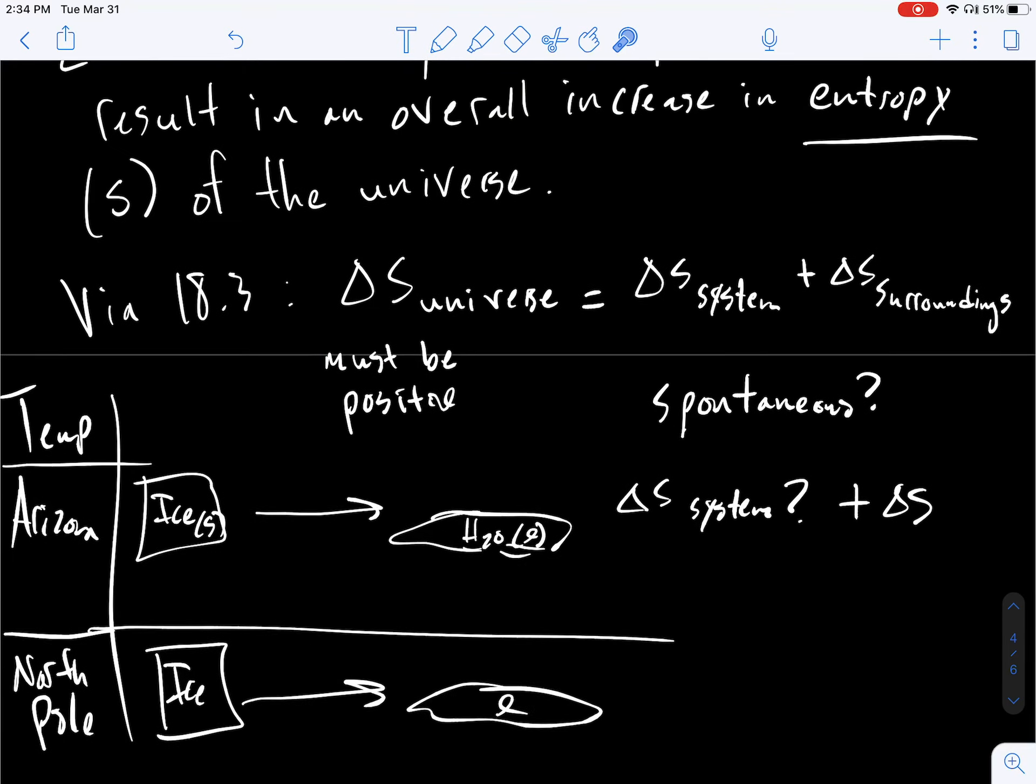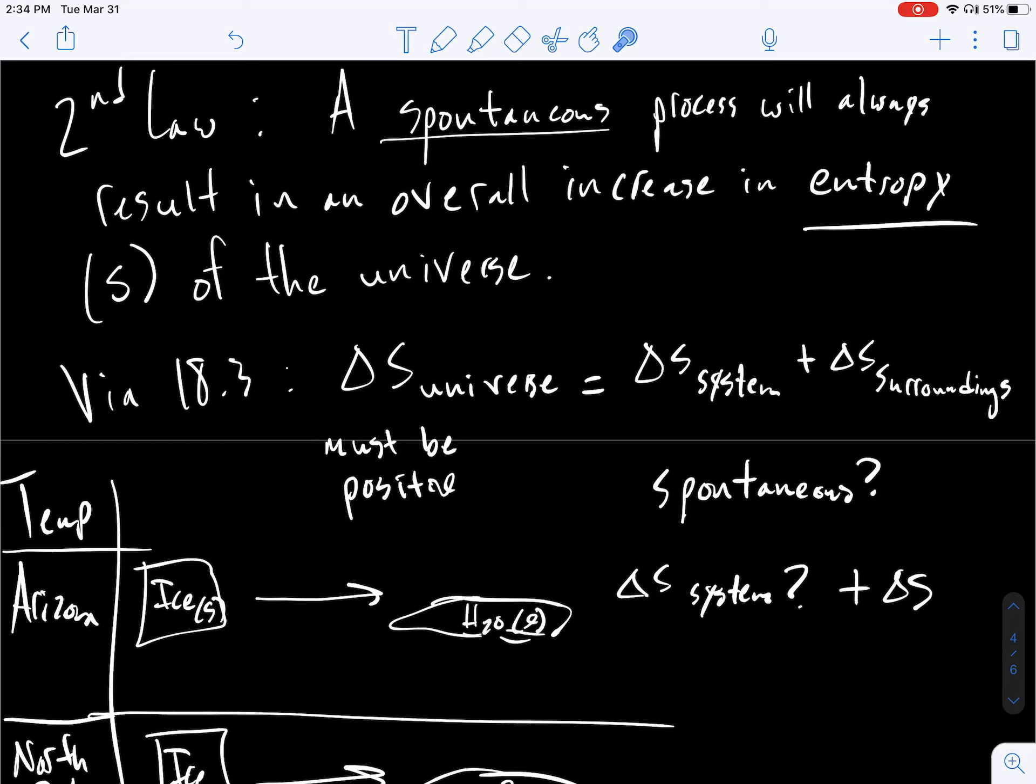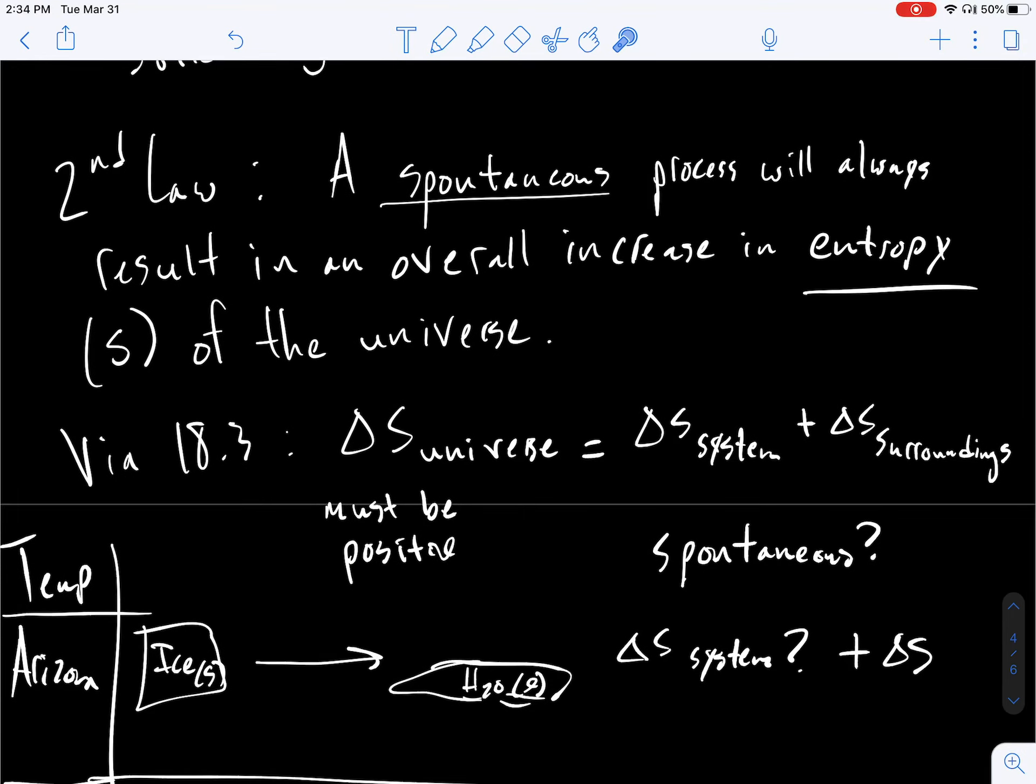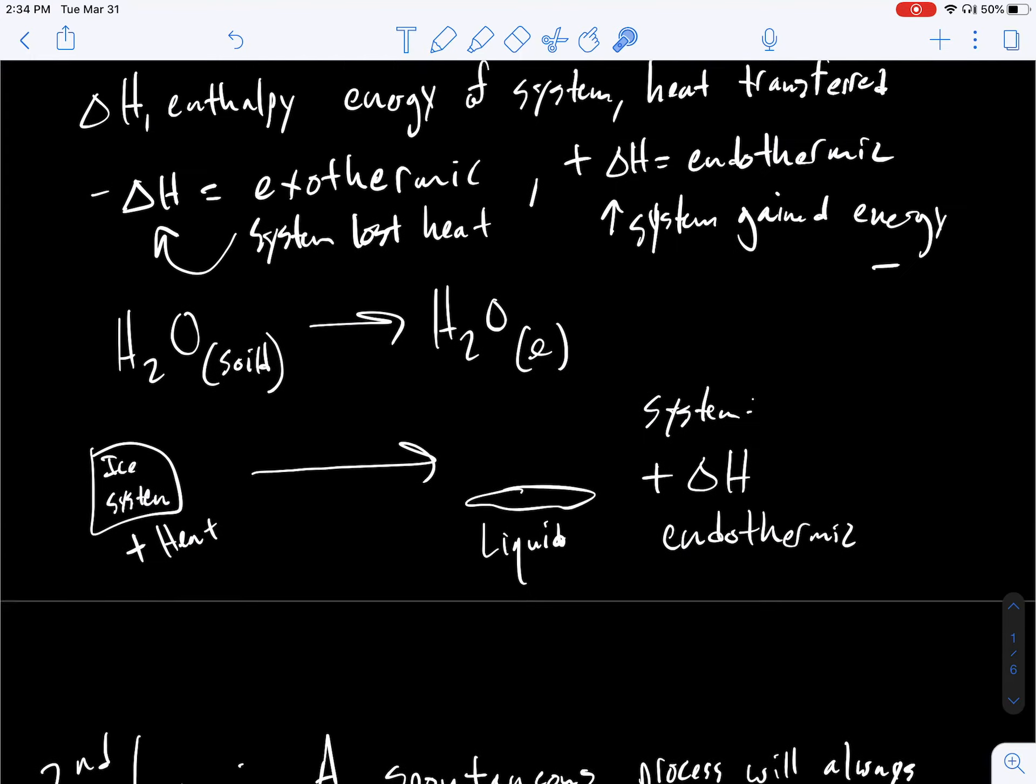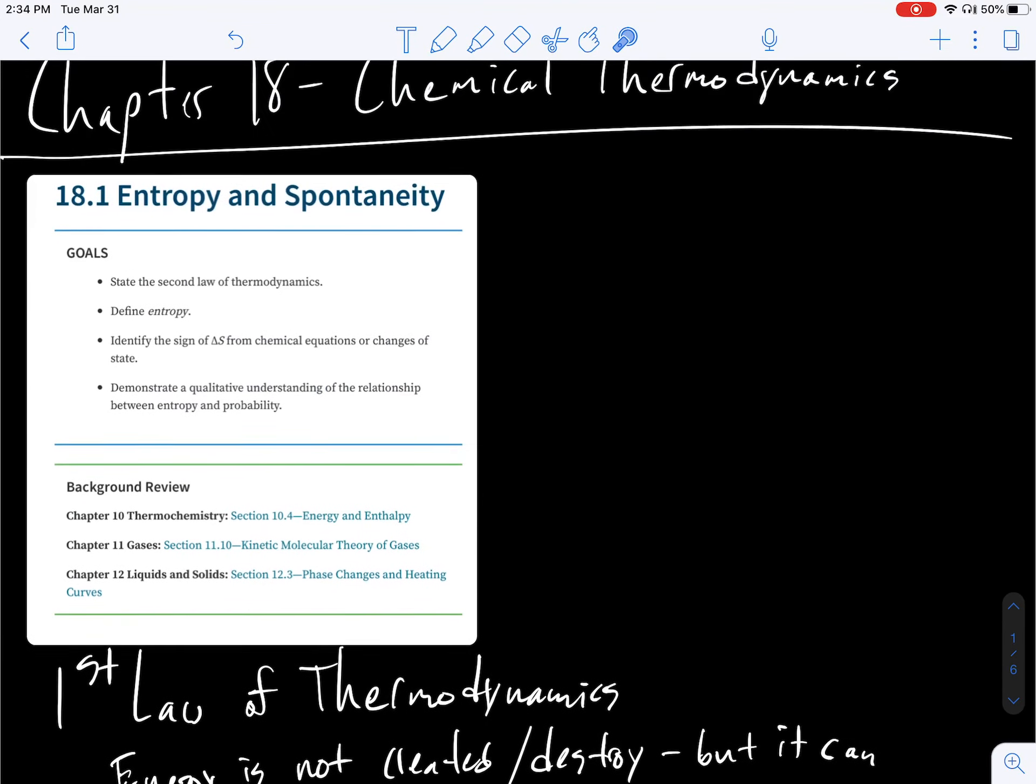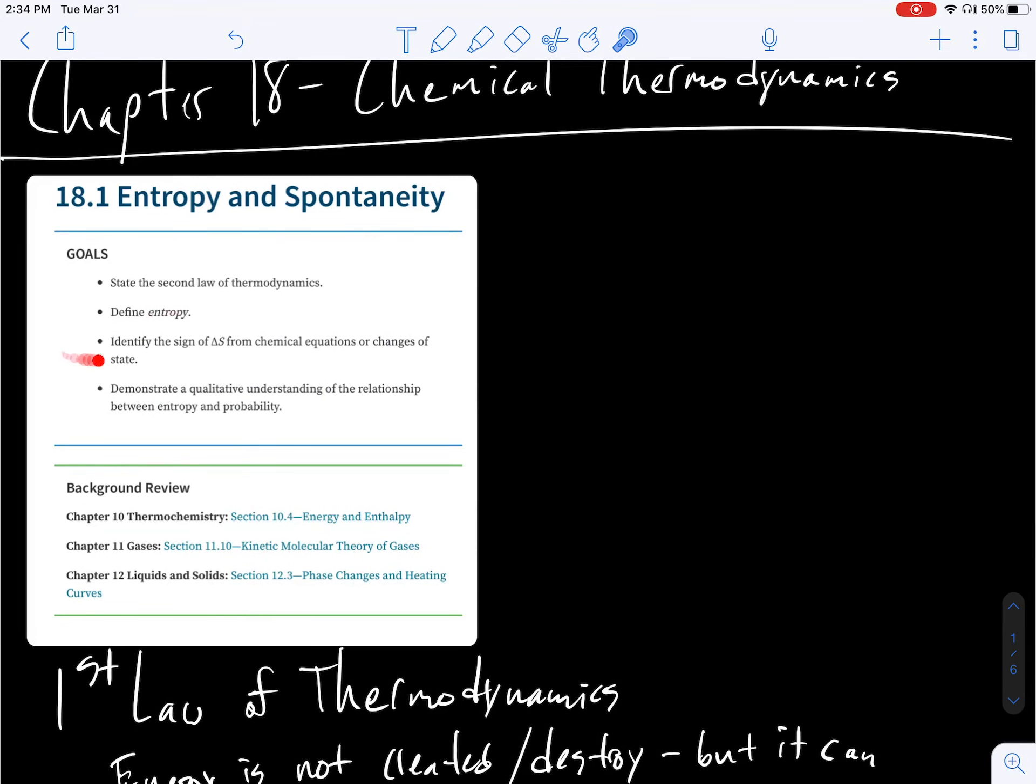So in the next sections, we are going to study more how we can actually predict whether something will actually be spontaneous. But the second law says that the universe has to overall increase in entropy. And that depends on our conditions here. So really, 18.1 is introducing spontaneity, but really focusing on predicting the sign of delta S from reactions and equations.